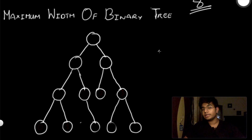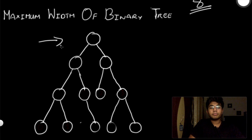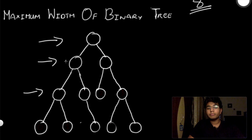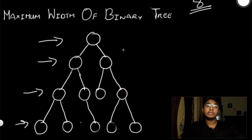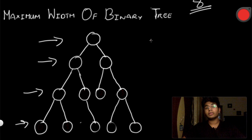We're going to take a breadth-first approach, meaning we're going to move left to right and traverse through each level. In order to solve this, we need to understand the idea of giving each of our nodes a position value.